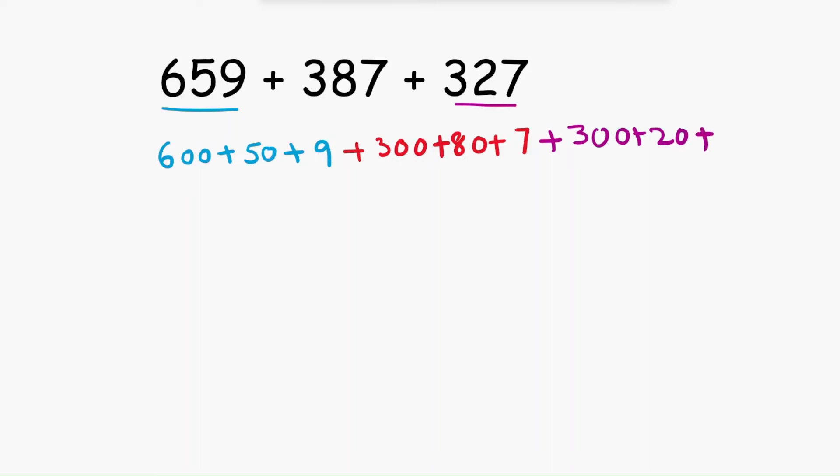First add the hundreds: 600 plus 300 is 900, 900 plus 300 is 1200. That means 1200 plus. Now add the tens: 50 plus 80 is 130, and 130 plus 20 is 150.